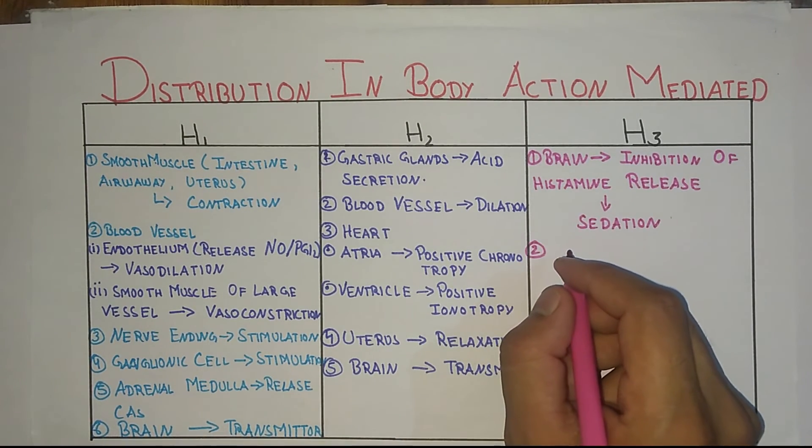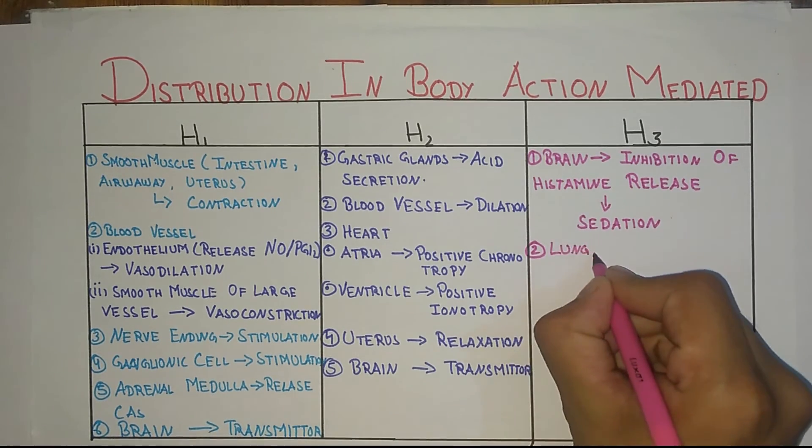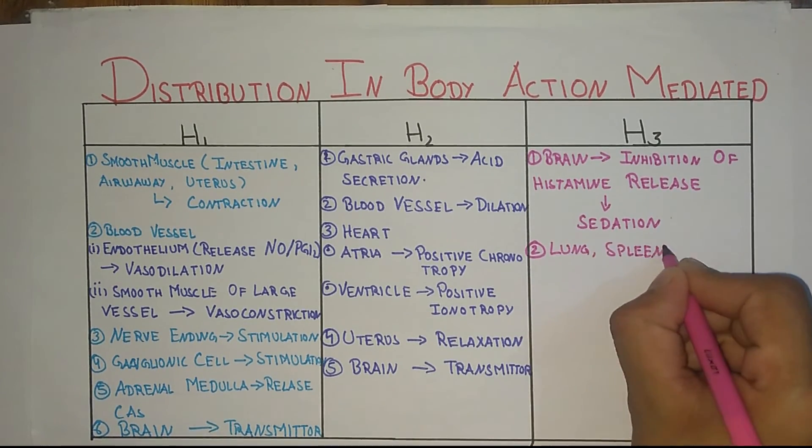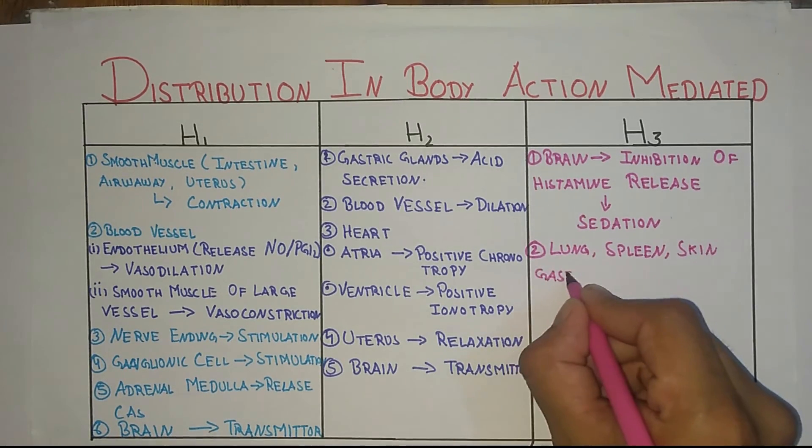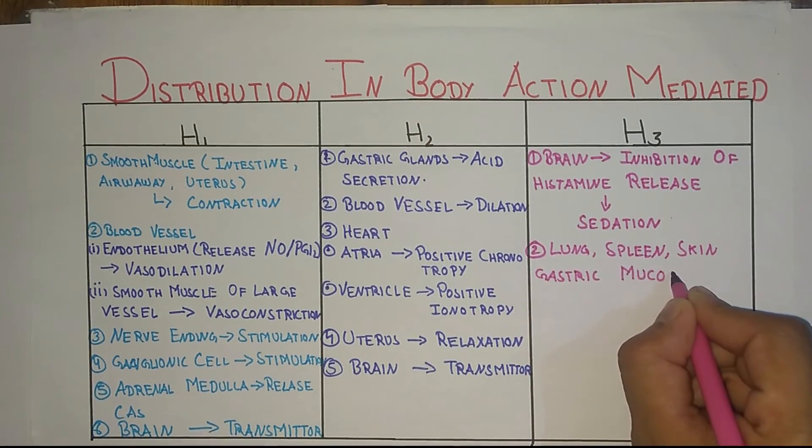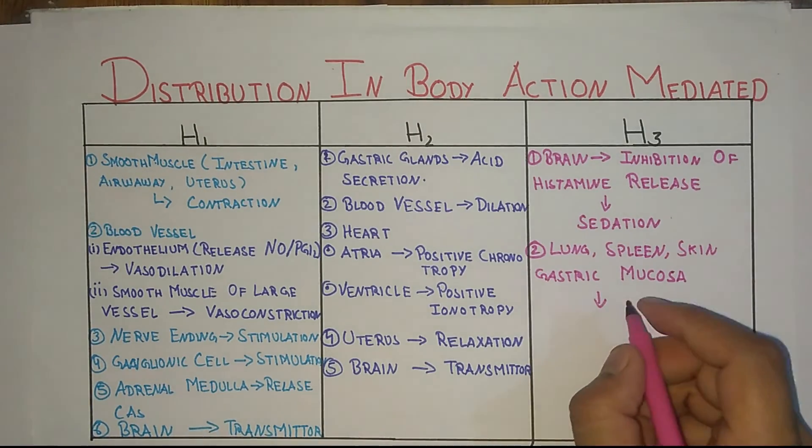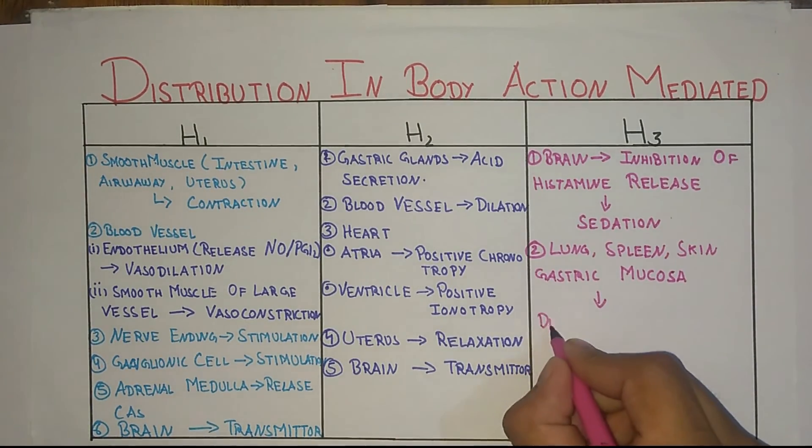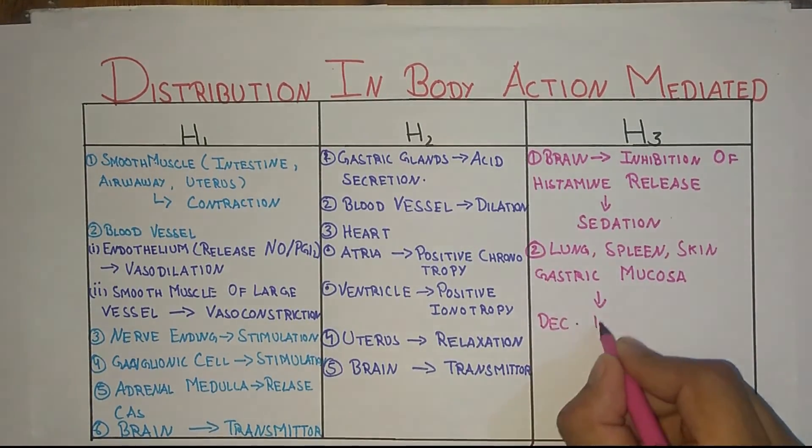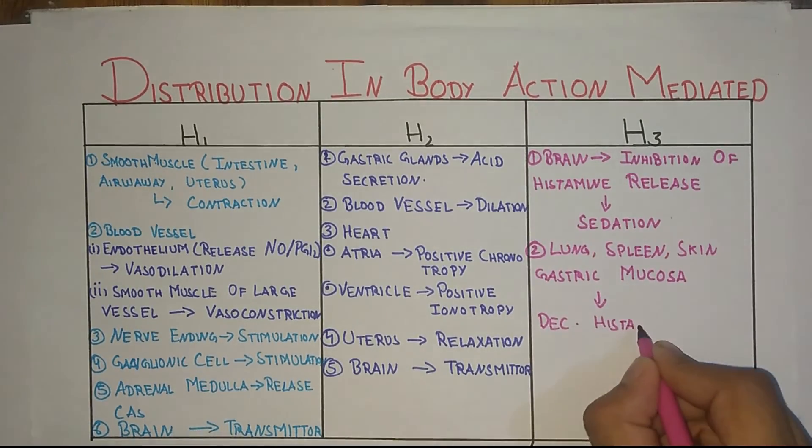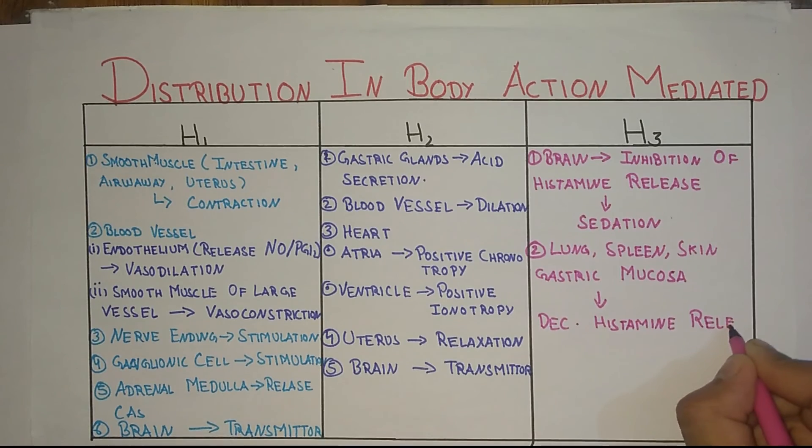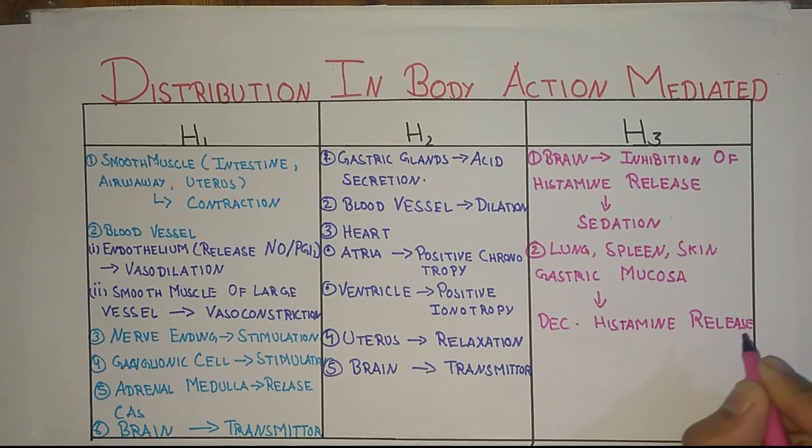H3 is present in uterus, lung, spleen, skin, and gastric mucosa where it causes decreased histamine release.